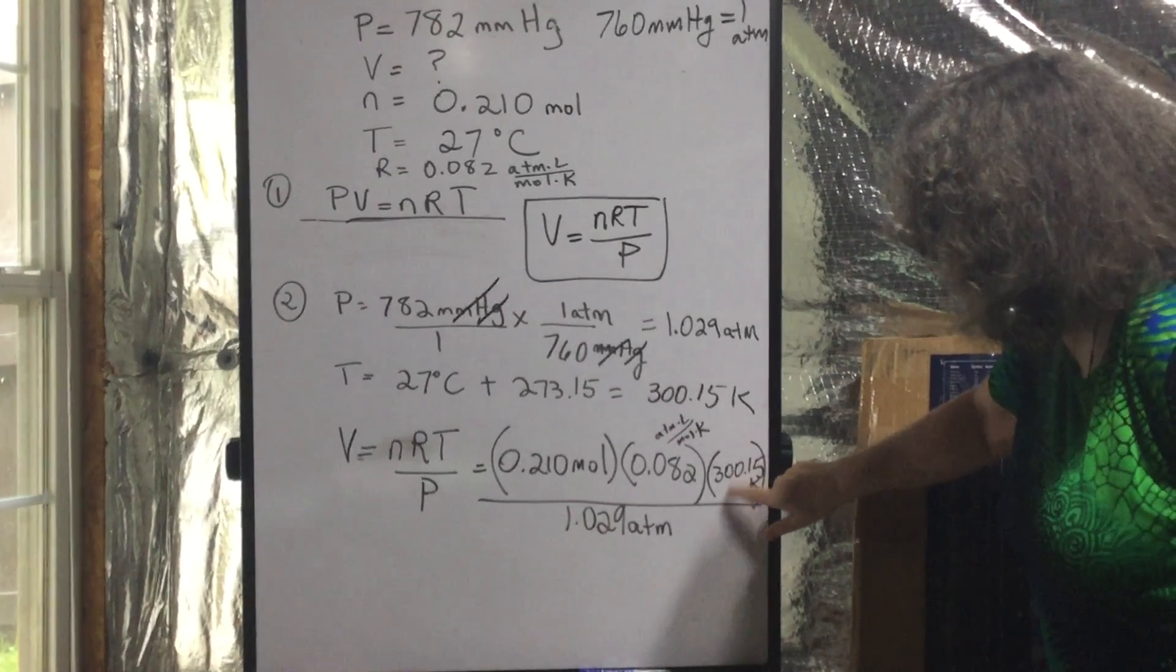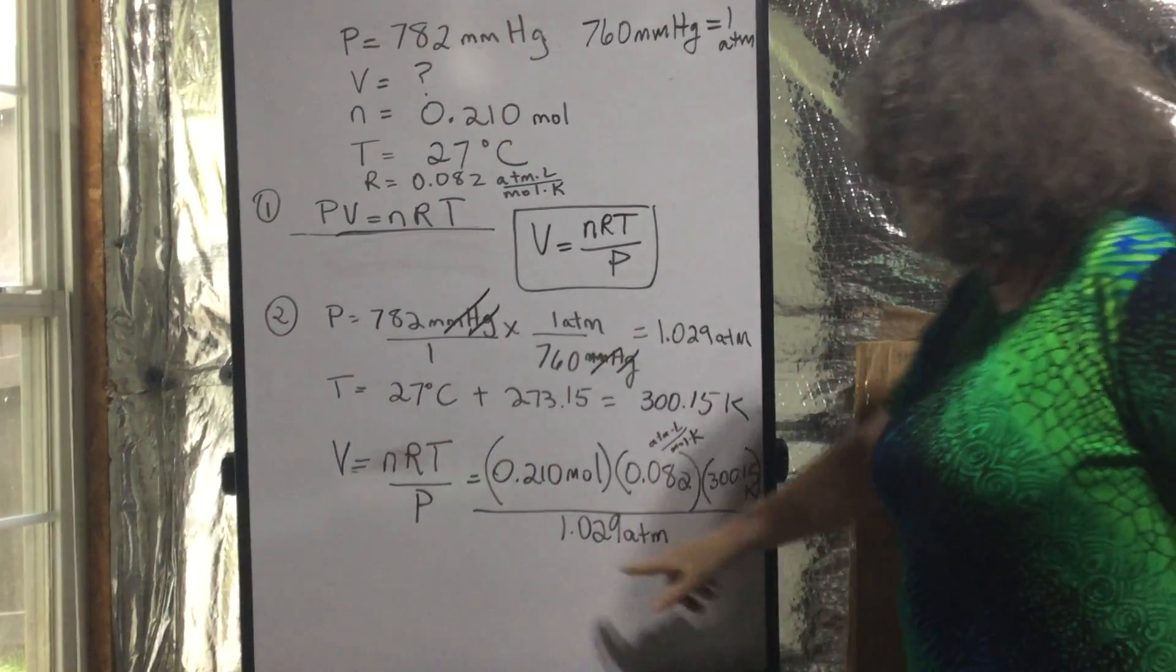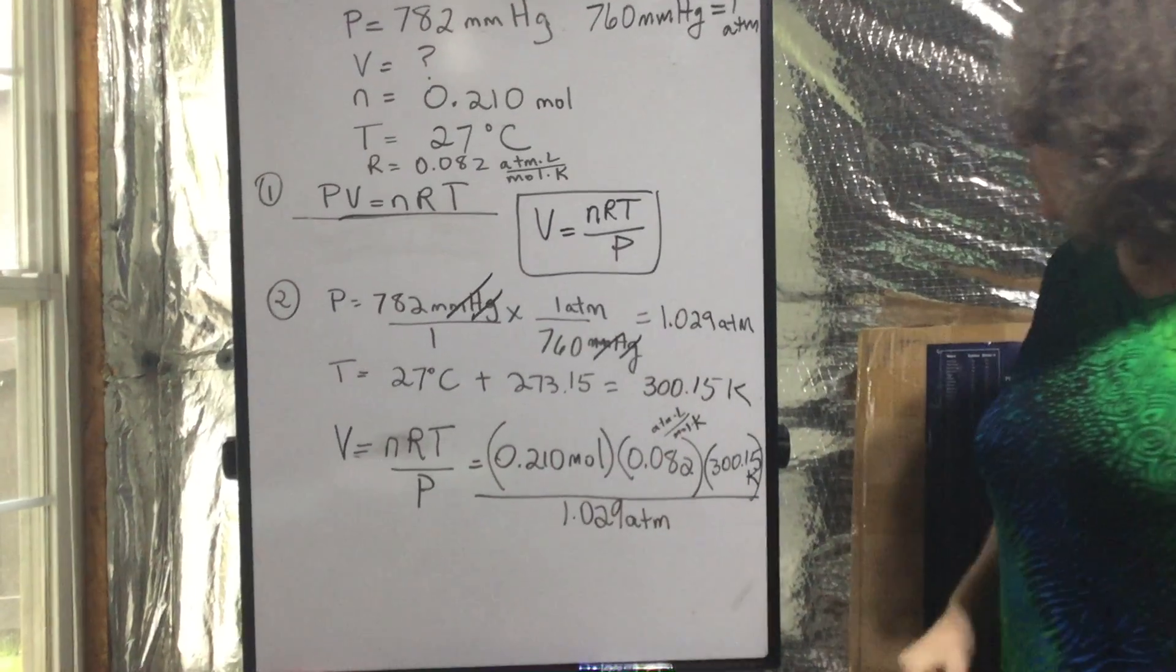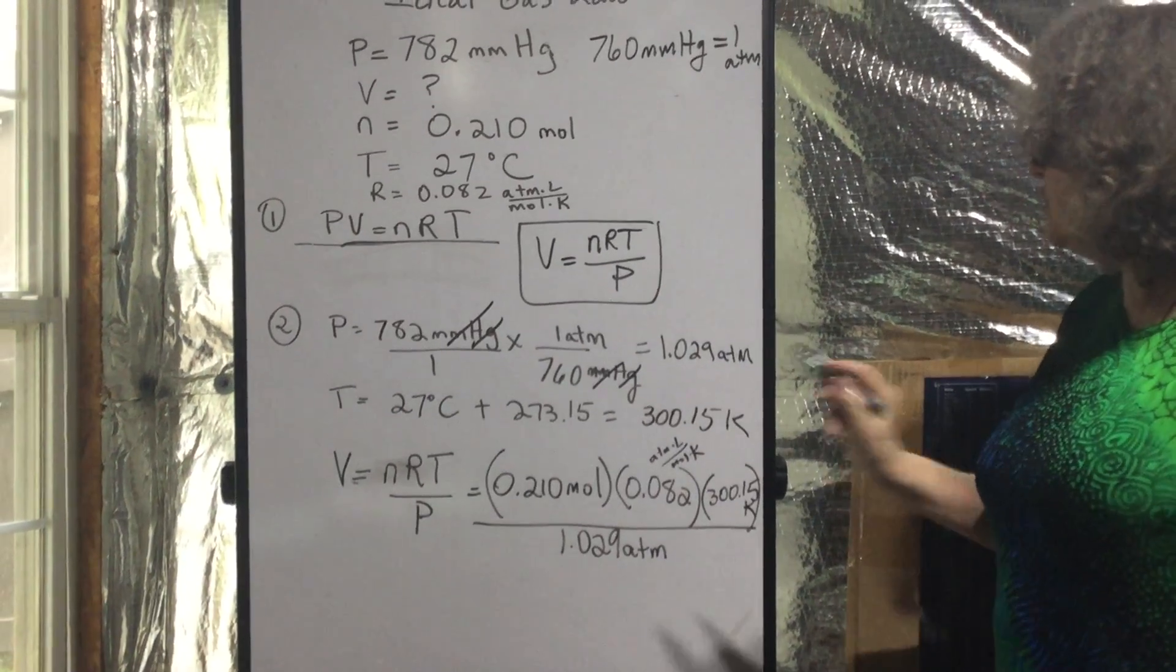And then temperature, 300.15 Kelvins, and we're going to divide it by the pressure, 1.029 atmospheres. Now,